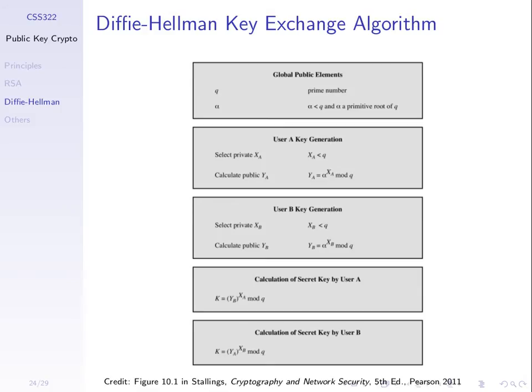User A and user B follow some steps. First, user A selects a private value X. User A selects some value, maybe randomly selects it, where it's less than Q. User A selects some private value X, denoted here XA, is less than Q. And then they calculate a public value Y, where Y is calculated from Alpha to the power of XA mod Q.